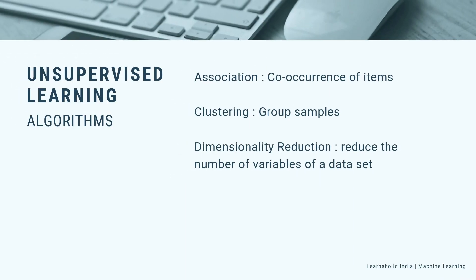Now let's see unsupervised learning algorithms. Unsupervised learning models are used when we only have the input variable x and no corresponding output variables. They use unlabeled training data to model the underlying structure of the data. There are three types of unsupervised learning: association, clustering, and dimensionality reduction. Association is used to discover the probability of co-occurrence of items in a collection. It is extensively used in market basket analysis.